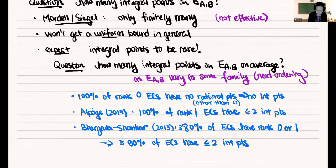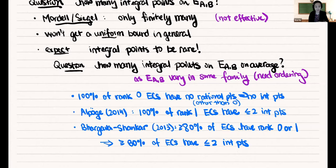From the work of Bhargava and Shankar, we know that at least 80% of elliptic curves have rank zero or one, which means at least 80% have fewer than or equal to two integral points. But this doesn't answer the question about averages — it doesn't tell us the average is bounded, because the remaining 20% could have an unbounded, huge number of points.